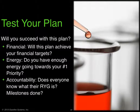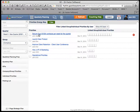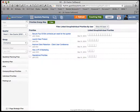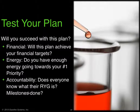Test your plan with three key tests. Financial: will this plan achieve your financial targets? Energy: do you have enough energy going towards your number one priority? — that's the energy map. In this example, my number one priority is to secure $100,000 contracts, and I can see that the bulk of the company's energy is going towards securing those contracts.